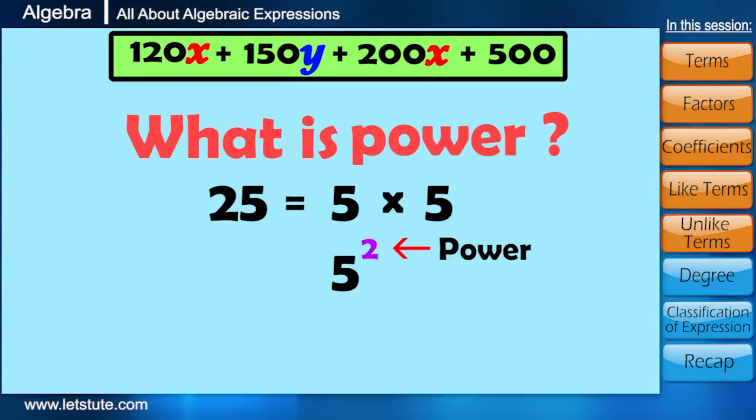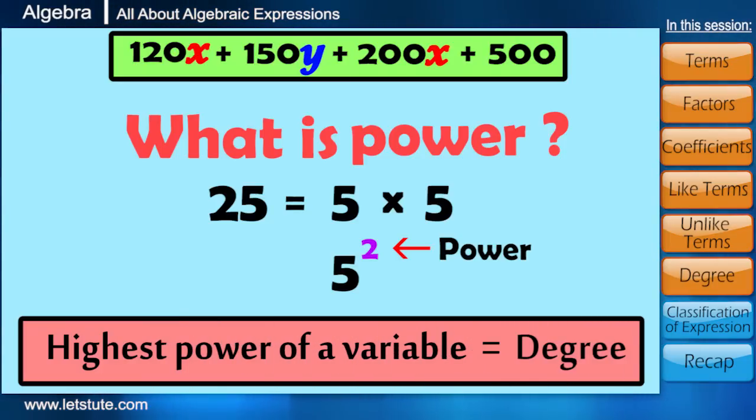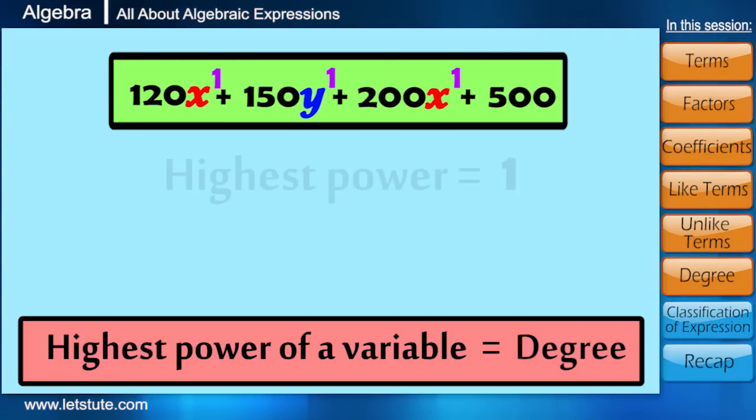So friends, in an expression, the highest power of a variable defines the degree of that expression. As we can see here, the highest power is 1. Therefore, the degree is 1.